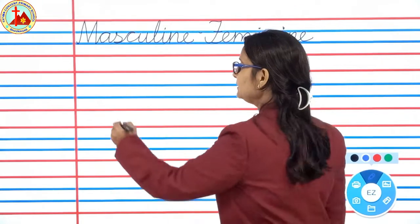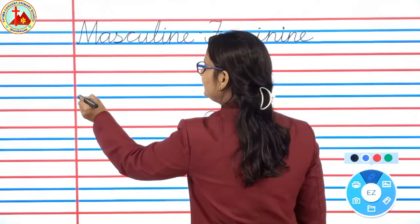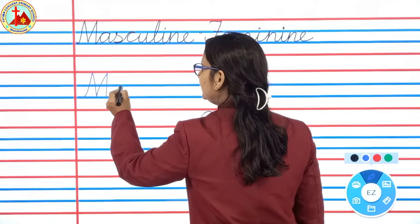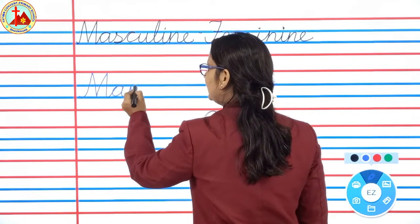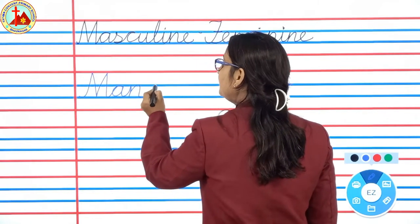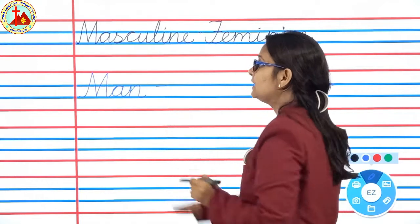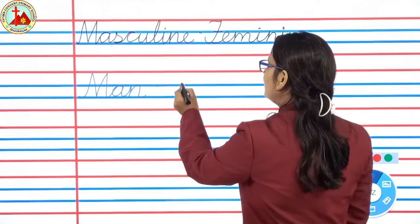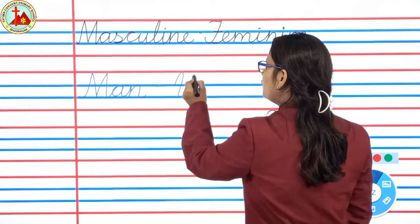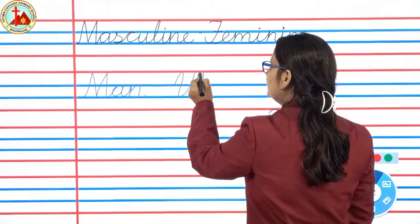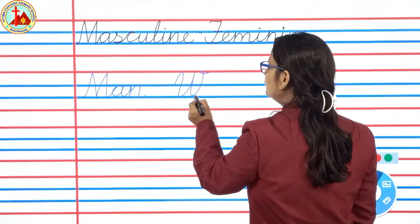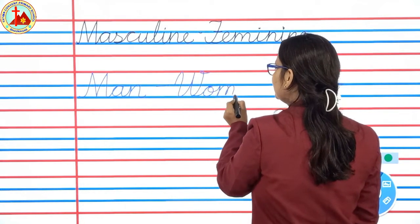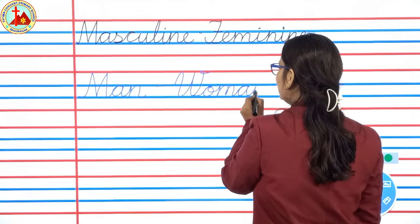Next word is very easy — man. M-A-N. Man. Feminine: woman. W-O-M-A-N. Woman.